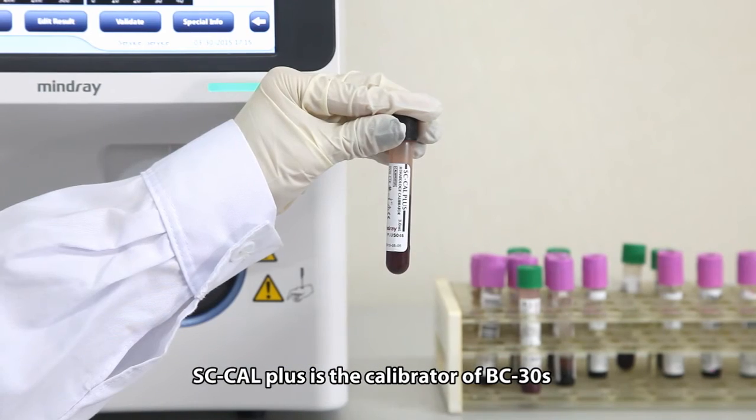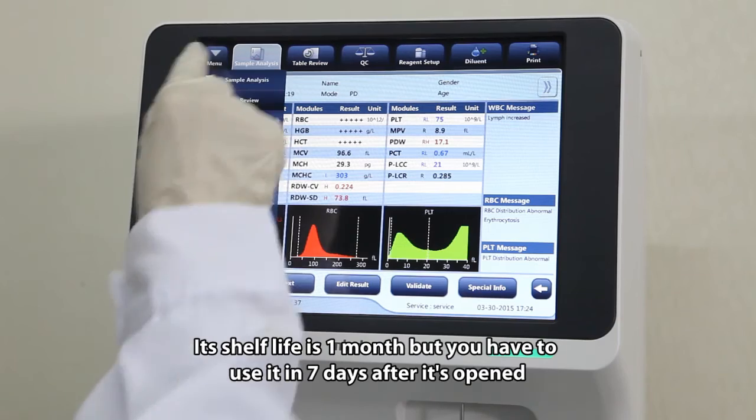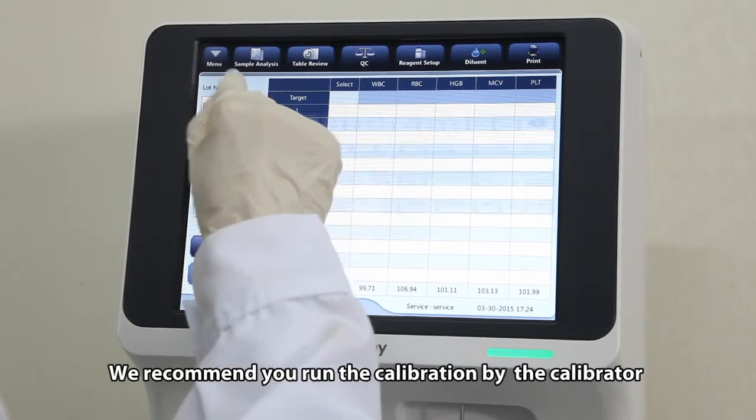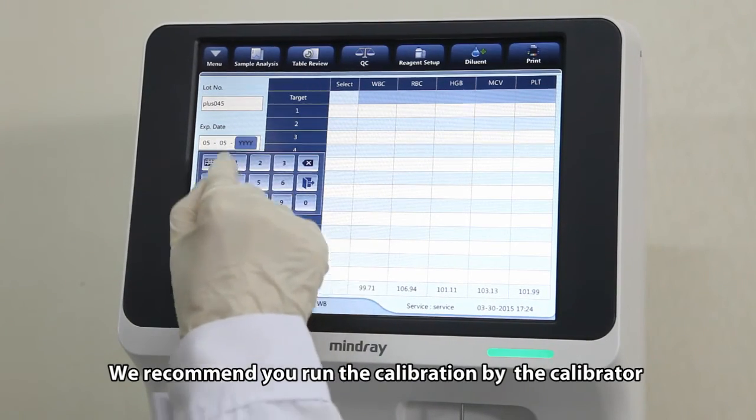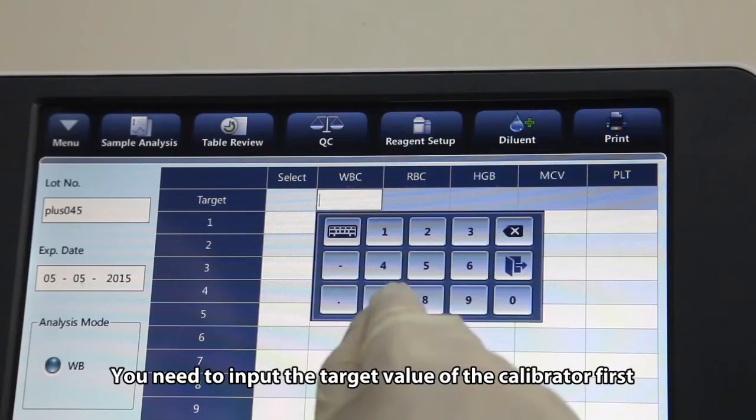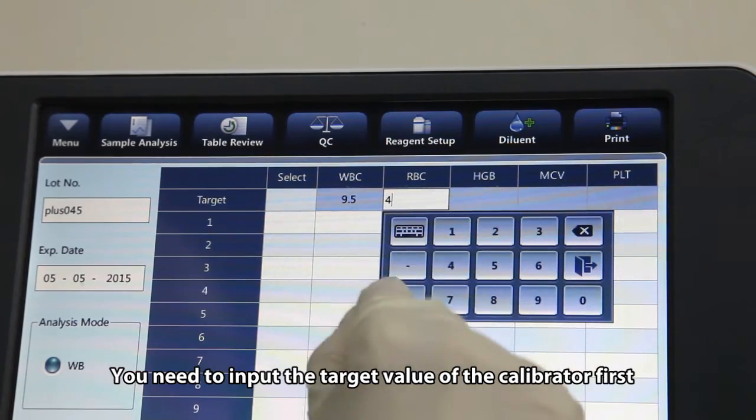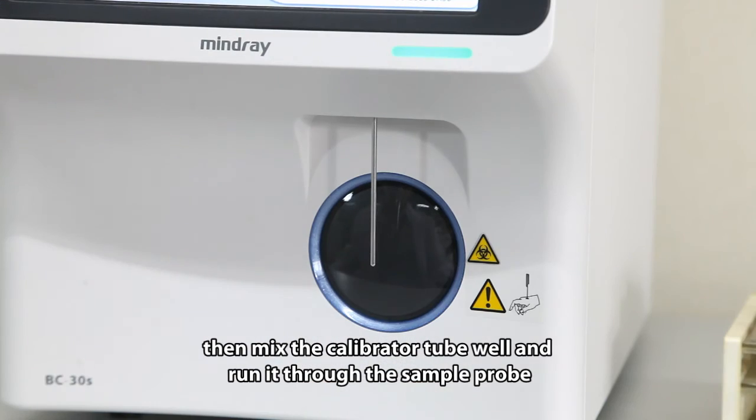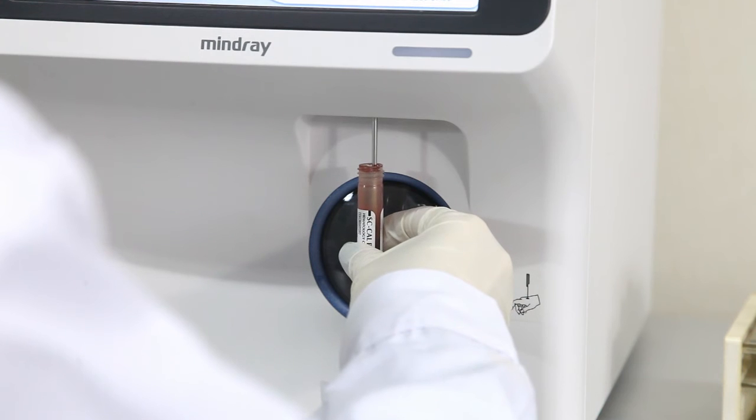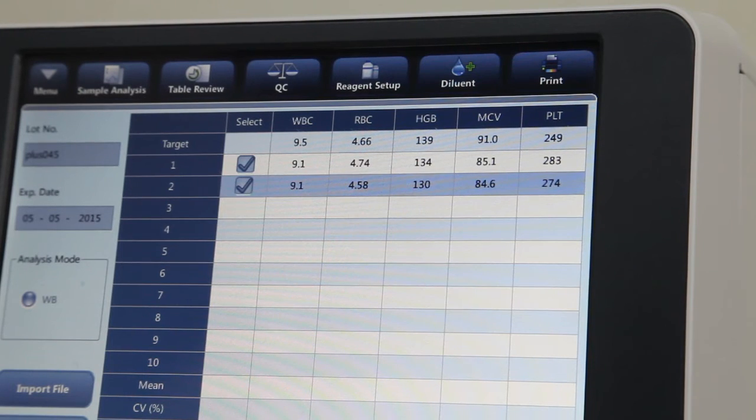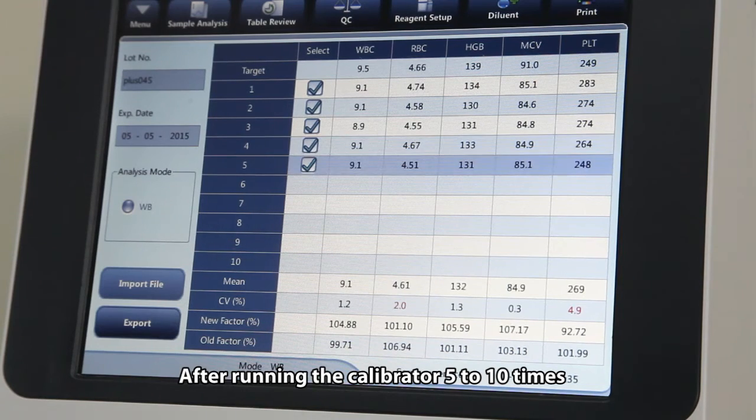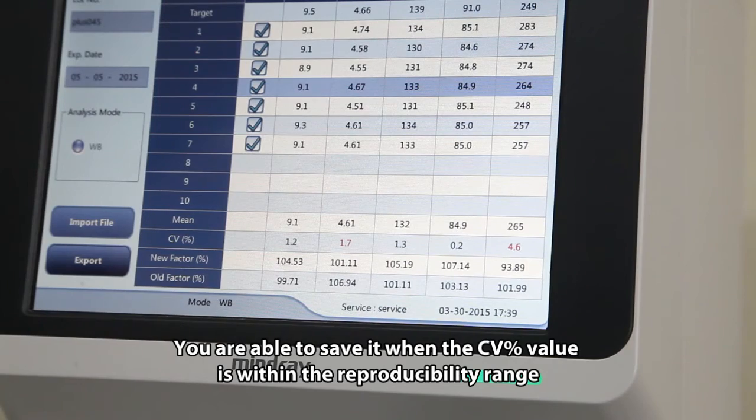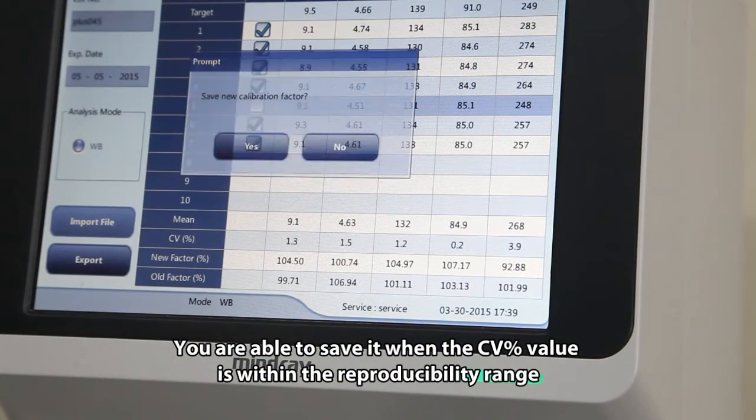SC-Cal Plus is the calibrator of BC-30S. Its shelf life is one month, but you have to use it in seven days after it's opened. We recommend you run the calibration by the calibrator. You need to input the target value of the calibrator first. Then mix the calibrator tube well and run it through the sample probe. After running the calibrator five to ten times, you may get the new calibration factor. You are able to save it when the CV percent value is within the reproducibility range.